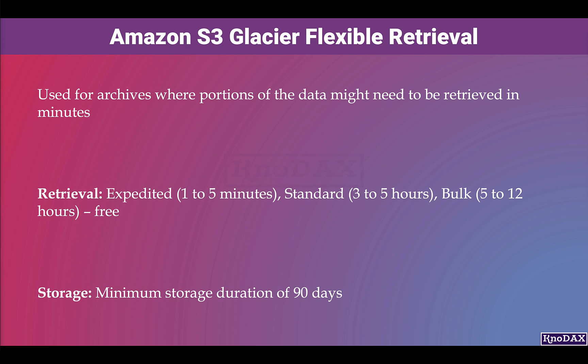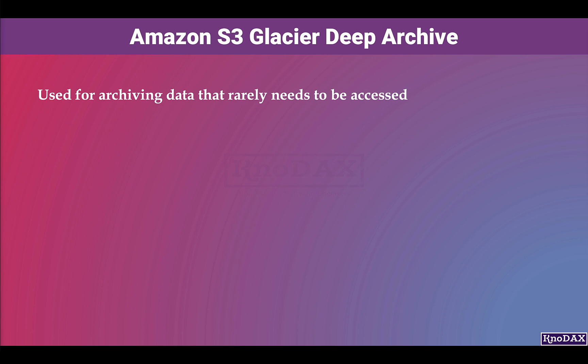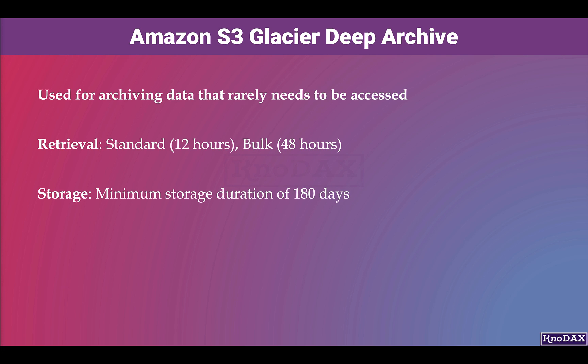S3 Glacier Deep Archive is used for archiving data that rarely needs to be accessed. Data stored in S3 Glacier Deep Archive has a default retrieval time of 12 hours, and bulk retrieval is 48 hours. It requires a minimum storage duration of 180 days.